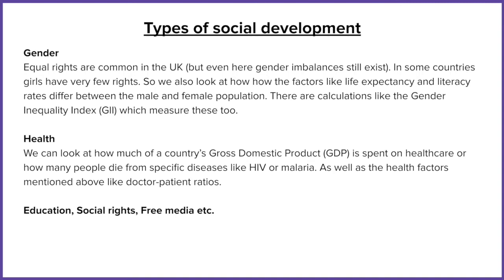Looking at gender: in the UK, we tend to have gender equality, but there are still imbalances — on average, men still earn more money than women. But in some countries, girls have even fewer rights. In some locations, women are effectively property and can't get a job, go to school, or drive a car. These things indicate that the social development of that location is actually less. Gender development looks at life expectancy and literacy rates between the male and female populations, among other factors, calculated as a GII — a Gender Inequality Index.